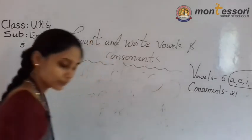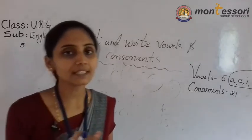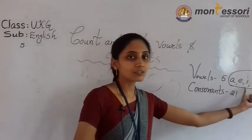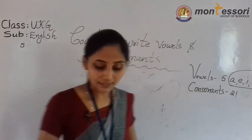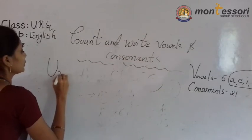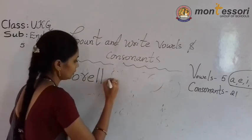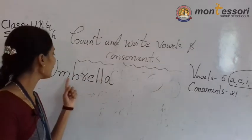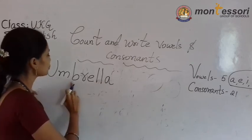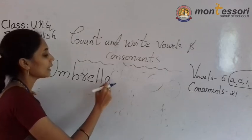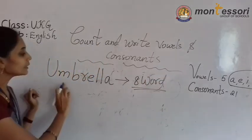Next, you can understand easily. Total vowels are five. These vowels are five letters. Next letter: U, M, B, R, E, L, L, A. What is this word? U-M-B-R-E-L-L-A — Umbrella. So how many letter word? 1, 2, 3, 4, 5, 6, 7, 8 — this is an 8-letter word.